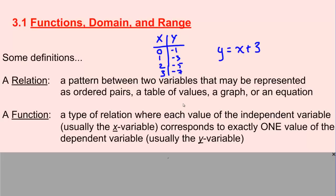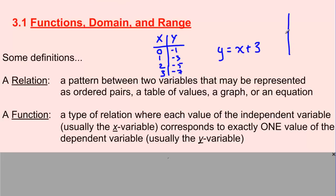A relation can be anything that compares two or more variables together — a table of values, an equation, or even a graph. Let me just draw a graph here. If I label the axes x and y, this is a relationship between x and y — that curvy snake-looking thing. A function is a specific type of relation where for any value of x, there's only one possible value that y could be.